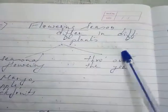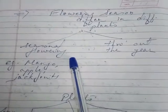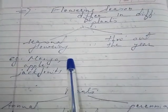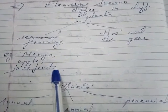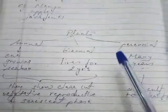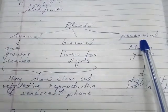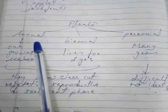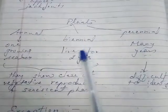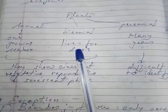Flowering season also differs in different plants. Some plants show seasonal flowering, while others can flower throughout the year. Seasonal flowering plants — for example mango, apple, and jackfruit — flower and develop fruits only in particular seasons. Plants can be classified as annual plants, biennial plants, and perennial plants. Annual plants have only one growing season.